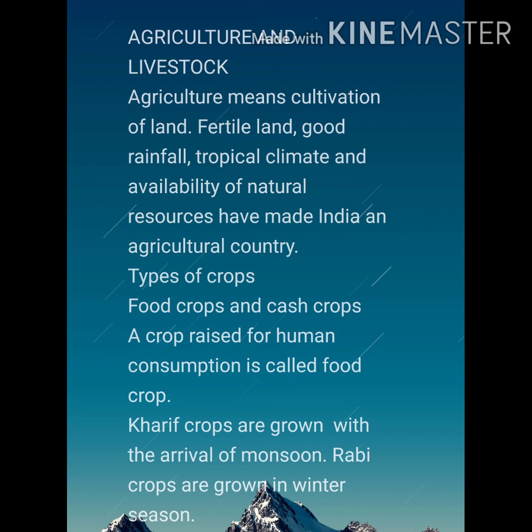Indian crops are divided into two groups: food crops and cash crops. A crop raised for human consumption is called a food crop. Kharif crops are grown with the arrival of monsoon, and Rabi crops are grown in the winter season.